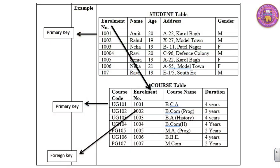For example, we have two tables: student table and course table. In the student table we declare enrollment number as primary key, whereas in the course table we declare course code as primary key. But enrollment number from the student table is also present in the course table — so in the course table, enrollment number is declared as foreign key. When we declare the same field as foreign key, the RDBMS software joins these two tables, allowing us to retrieve some data from the student table and some data from the course table in a single query.